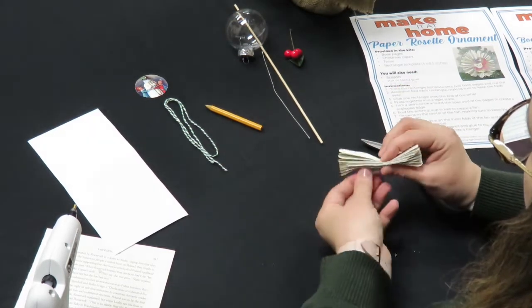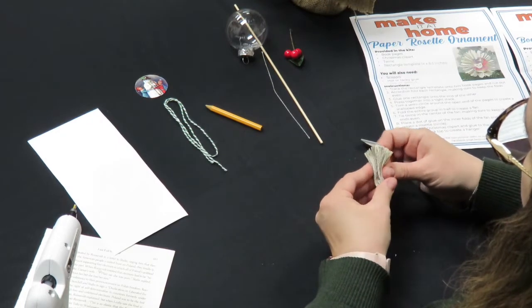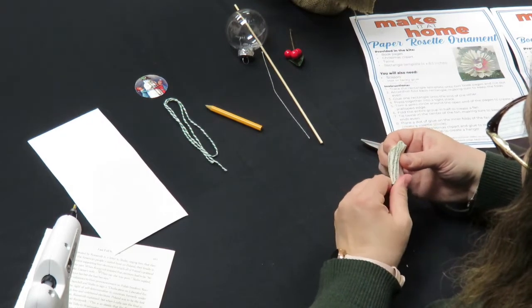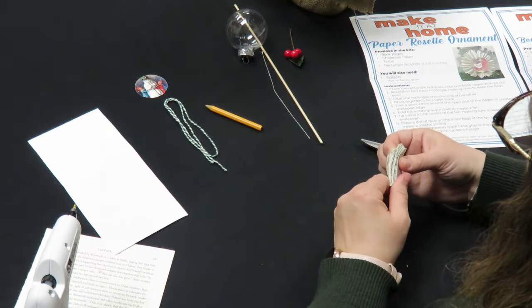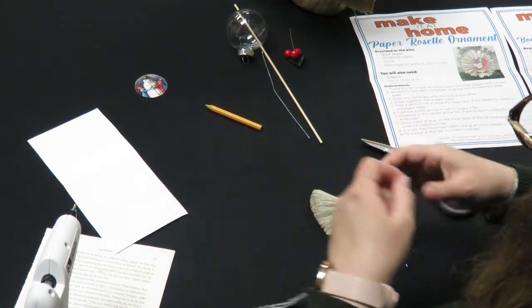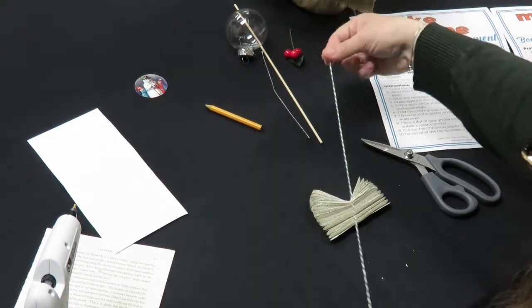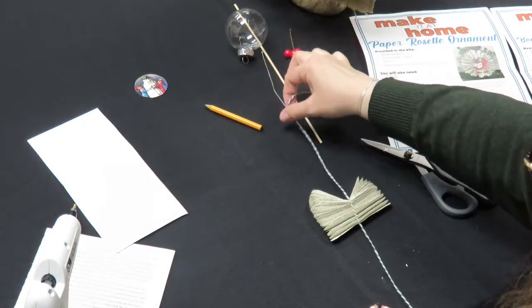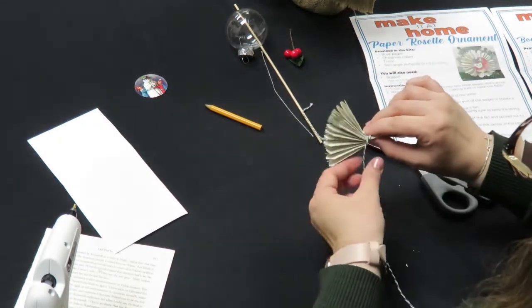Next, fold the stack in half like a fan. Open it up. You're going to take your twine, get it about even in the middle of the string, and tie it around the center of the fan.